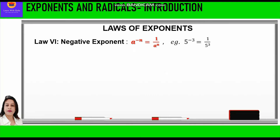The sixth law of exponents is the negative exponent. It says a raised to power negative n is equal to 1 upon a raised to power n. So basically, the negative power becomes positive by reciprocating the base. For example, 5 raised to power minus 3 can be written as 1 upon 5 raised to power 3. Similarly, a upon b raised to power minus n is equal to b upon a raised to power n. For example, 2 by 5 raised to power minus 3 becomes 5 by 2 raised to power 3.